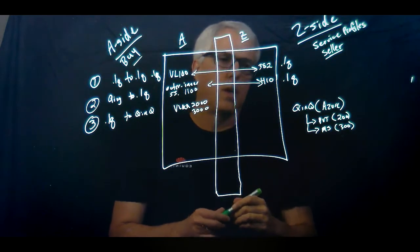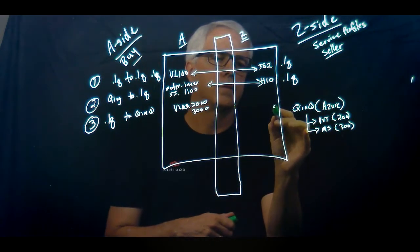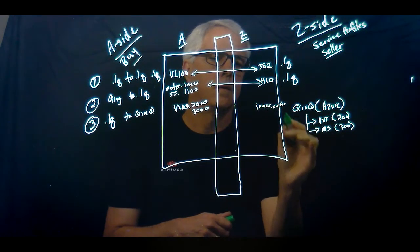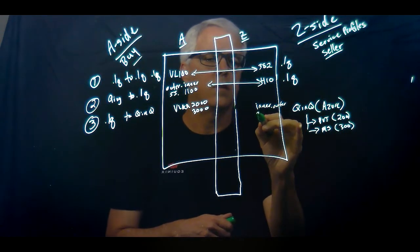So in this case, what will happen is there's a Q&Q, an outer tag. Let's put an outer tag here. And there's an inner tag here. And basically, there are two VLANs on the inner tag, in this case, 200 and 300.